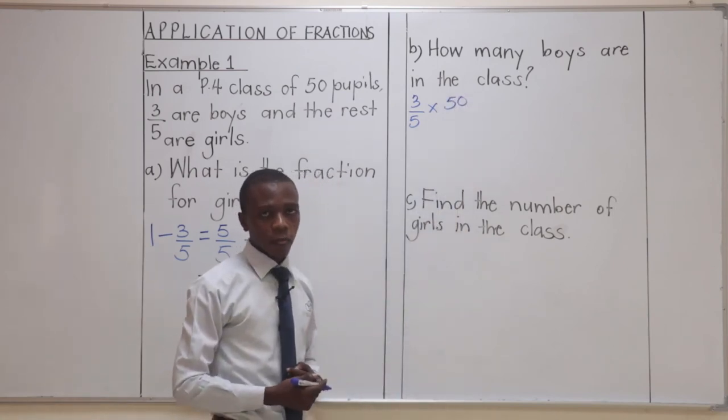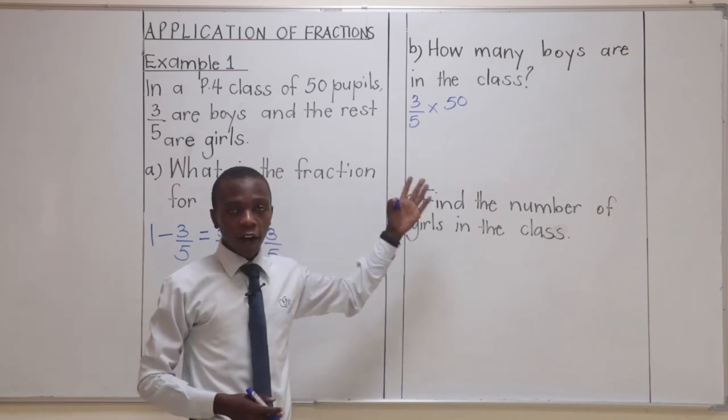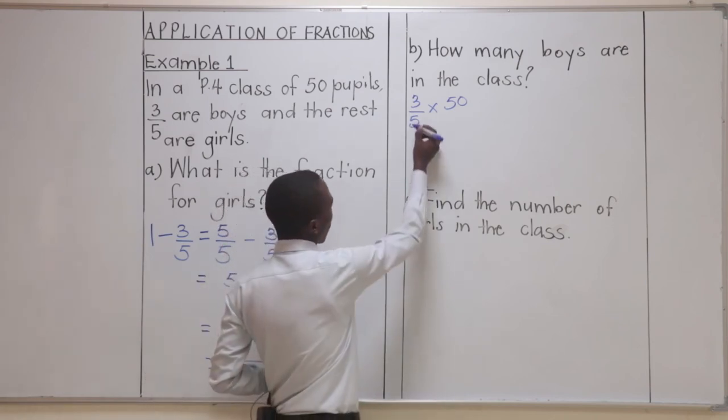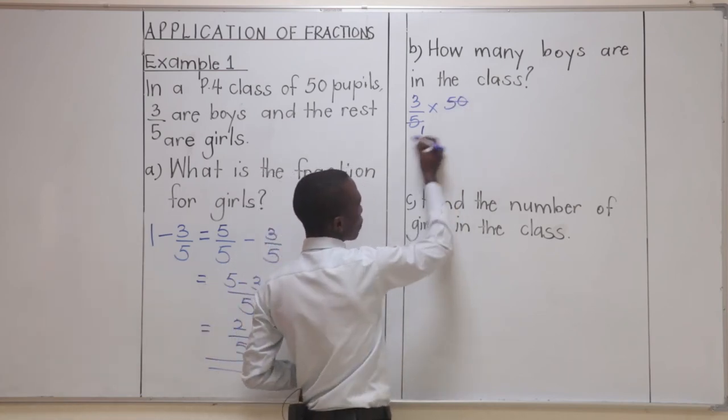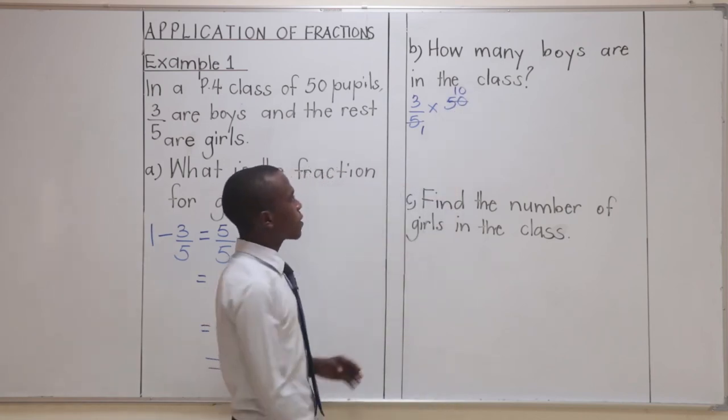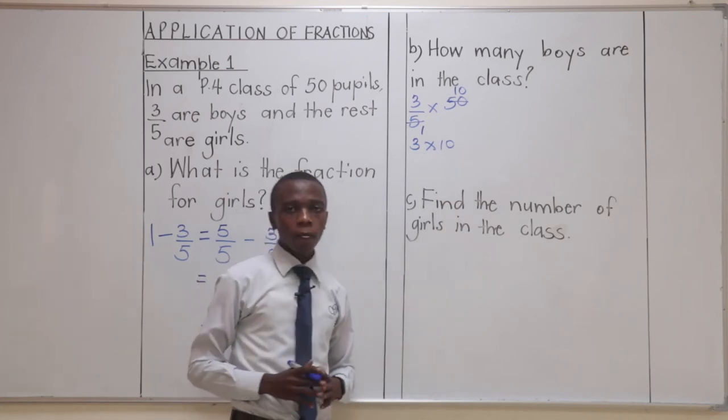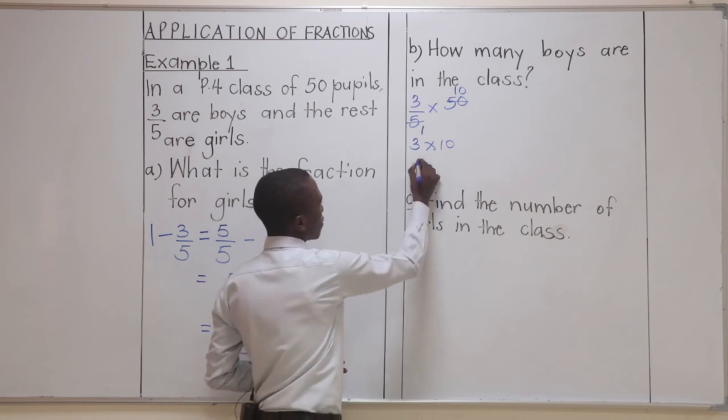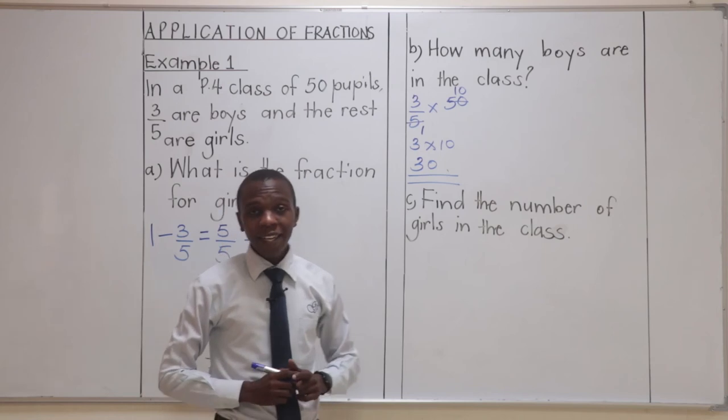What does this give us? There are many ways, but let's take the simplest one. We are going to simply divide by 5, because these are all multiples of 5. When we divide 5 by 5, we remain with 1. And when we divide 50 by 5, we remain with 10. So, this means that we are remaining with 3 times 10. And what is 3 times 10? This is simply 30. Therefore, the number of boys is actually 30.